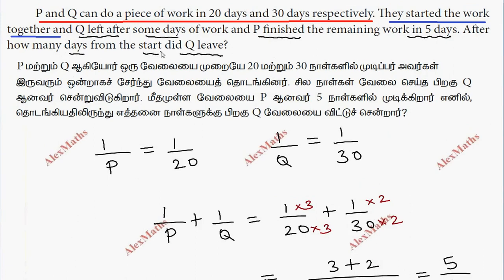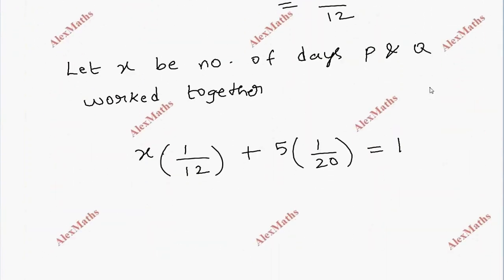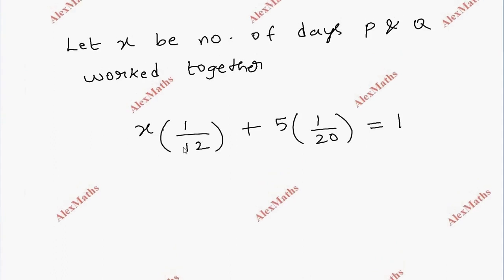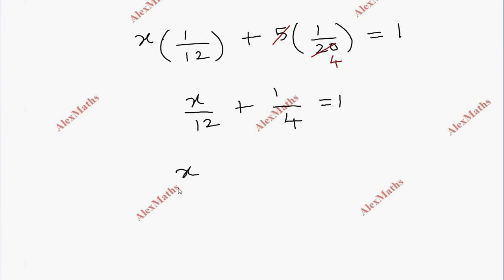After how many days from the start did Q leave? P and Q left the work. So we cancel and get 1 by 4 equals, then 1 by 4 on the other side.